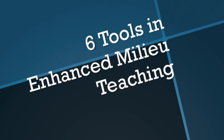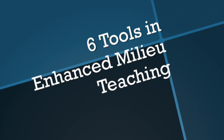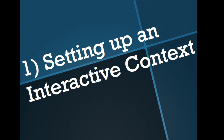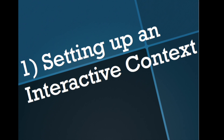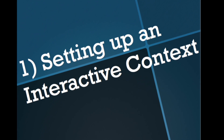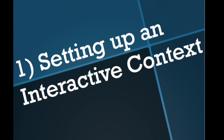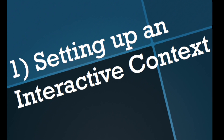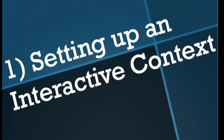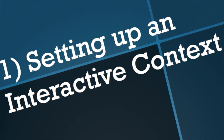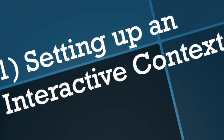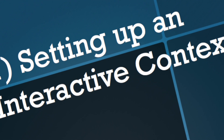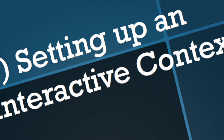There are six tools when introducing the Enhanced Milieu Teaching technique. The first tool is to set up an interactive context. This enhances the opportunities for communication. Get at eye level as the child and do whatever the child is doing and follow their lead. Avoid giving any directions and let the child initiate the communication. Choose things that may be engaging for the child.